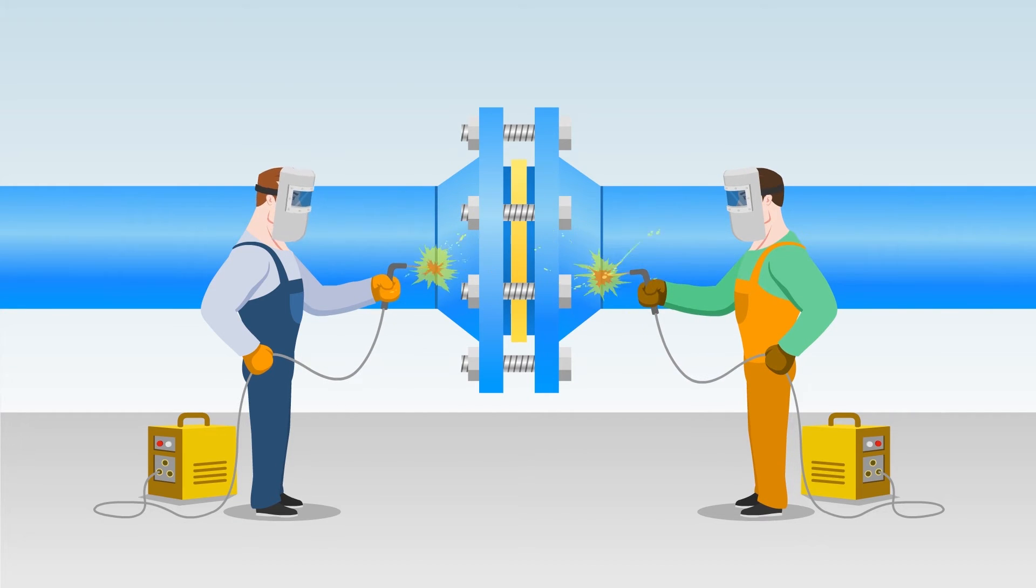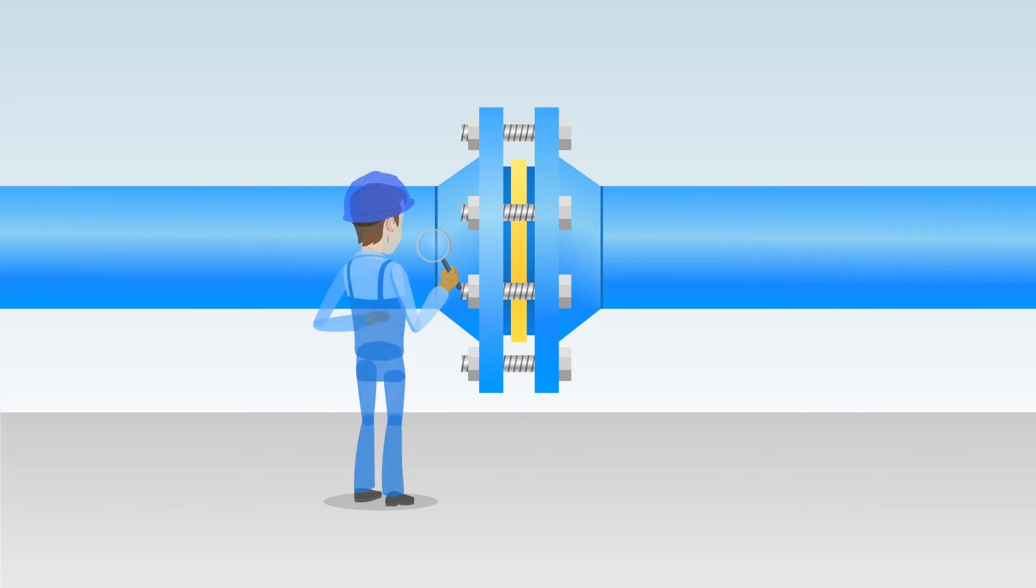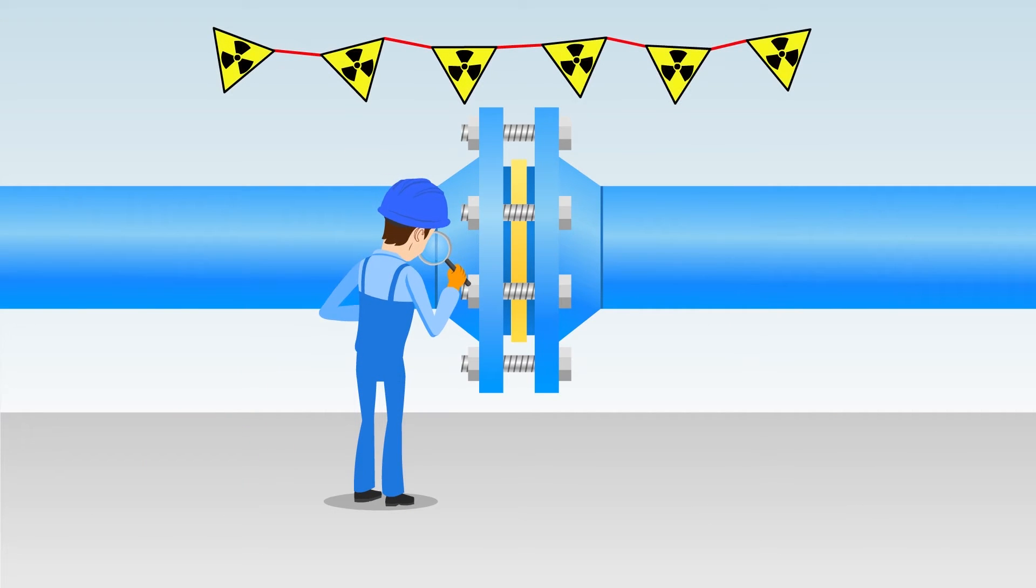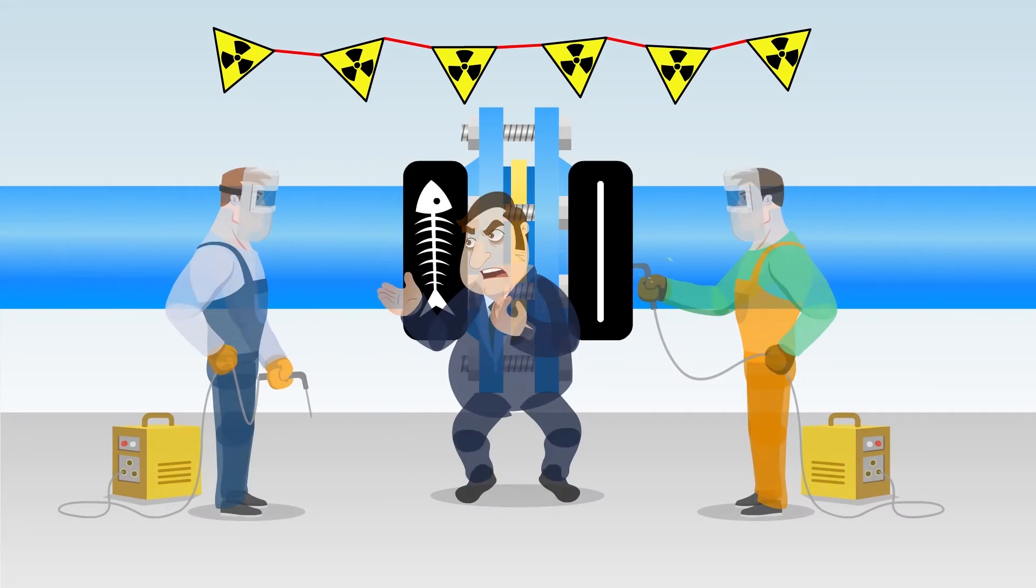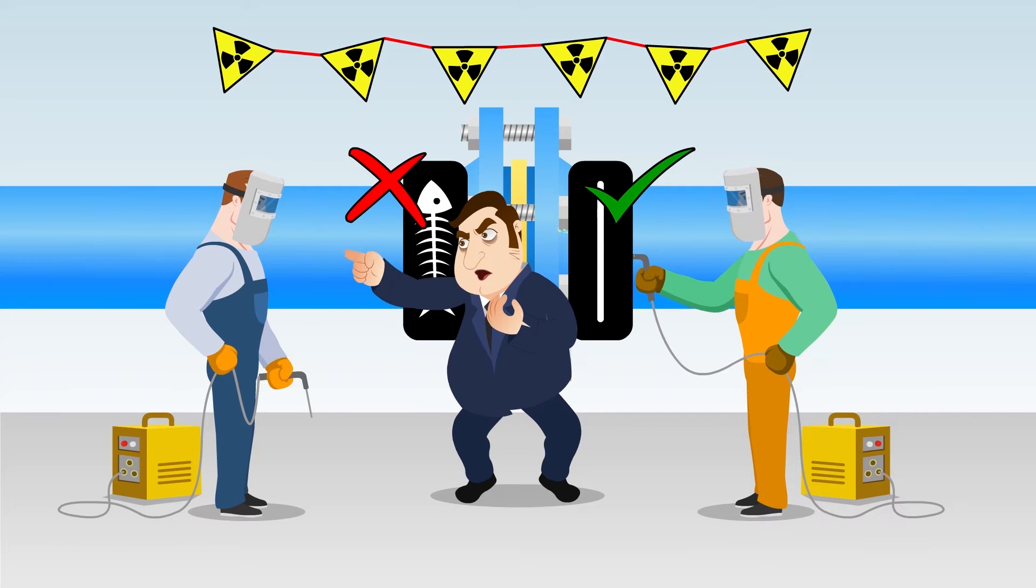Welded joints are very tightly controlled. Welders are qualified and continually tested. Their welds are inspected on a continual basis, and corrective actions to eliminate improper assembly are immediate.